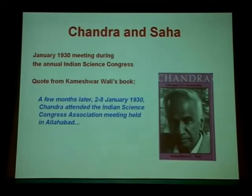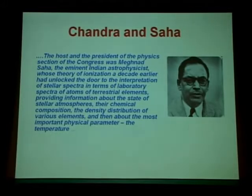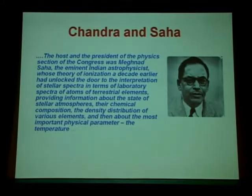This was before Chandra sailed for Cambridge. It says: a few months later, on 28 January 1930, Chandra attended the Indian Science Congress Association meeting held in Allahabad. And there, the host and president of the physics section of the Congress was Meghnad Saha — the eminent Indian astrophysicist whose theory of ionization a decade earlier had unlocked the door to the interpretation of stellar spectra in terms of laboratory spectra of atoms of terrestrial elements, providing information about the state of stellar atmospheres, their chemical composition, the density distribution of various elements, and the most important physical parameter: temperature.